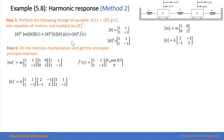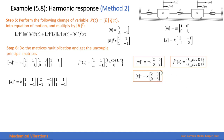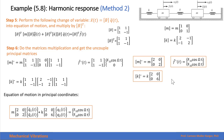We also obtain the forcing vector in terms of principal coordinates by multiplying the forcing vector by the transpose of the modal matrix. The resulting matrices are both diagonal, which means we have successfully decoupled the system of equations. The equation of motion in principal coordinates represents two independent single-degree-of-freedom systems.